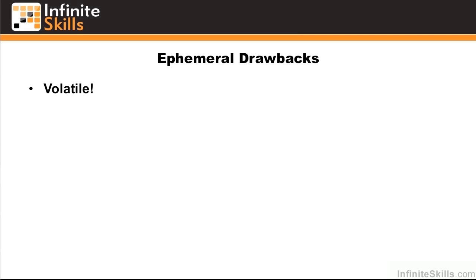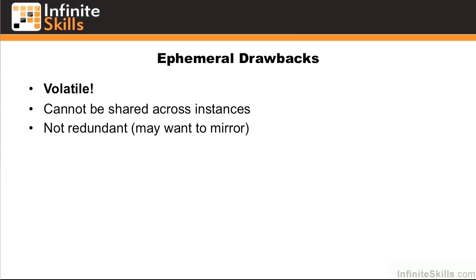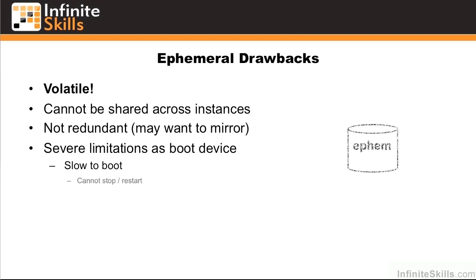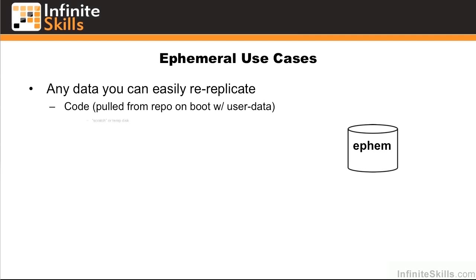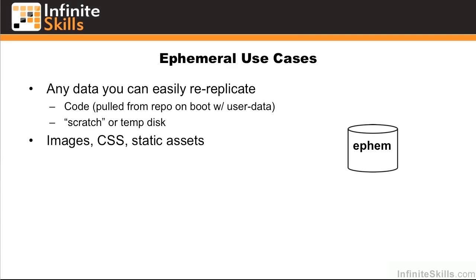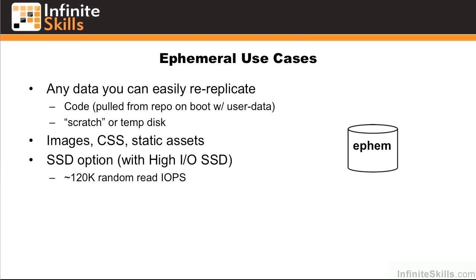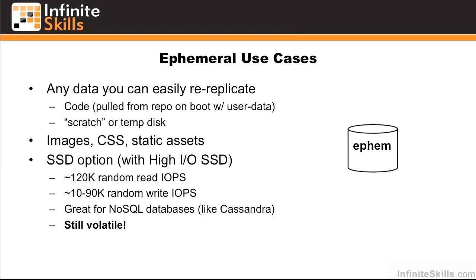Some of the drawbacks to ephemeral disk are that it is volatile — the disk goes away when your instance goes away. It cannot be shared across instances; it's tied to that single EC2 server. It is not redundant, so you may want to mirror multiple ephemeral disks together. There are severe limitations as a boot device — it's slow to boot and you cannot stop and restart it. Good use cases include any data you can easily re-replicate, such as code pulled from your repo on boot, or a scratch or temporary disk. Ephemeral also comes with an SSD option in the high I/O instances, and many folks use this for NoSQL databases — you can get up to 120,000 random read IOPs and about 10,000 to 90,000 random write IOPs. It is, however, still volatile, so if you need to store this data permanently, you need to handle that inside of your NoSQL cluster.